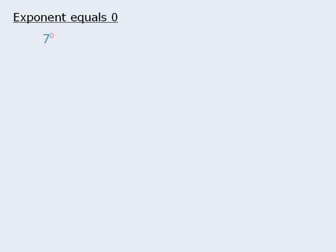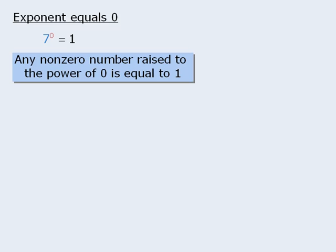The next property concerns expressions where the exponent is equal to 0. At this point, our current definition of exponent falls apart. What does it mean to take the base of 7 and multiply it by itself 0 times? It seems it should equal 0, but it actually equals 1. In fact, if we take any non-zero number and raise it to the power of 0, the result will always be 1.